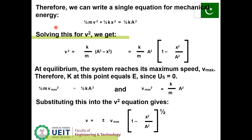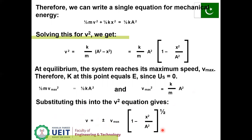We can write a single equation: (1/2)mv² + (1/2)kx² = (1/2)kA². Solving for v²: v² = (k/m)(A² − x²) = (k/m)A²(1 − x²/A²). At equilibrium the system reaches maximum speed: (1/2)mv²_max = (1/2)kA², so v²_max = (k/m)A². Therefore v = ±v_max √(1 − x²/A²).